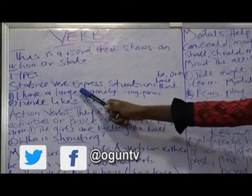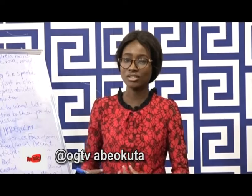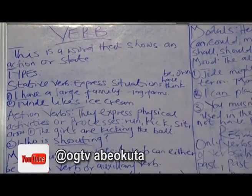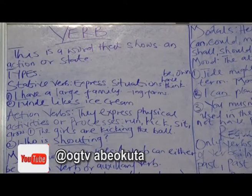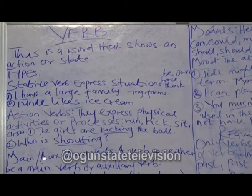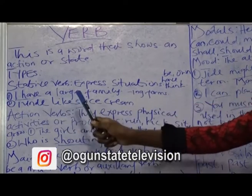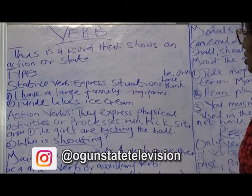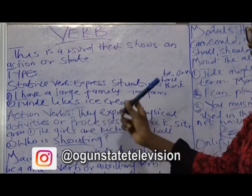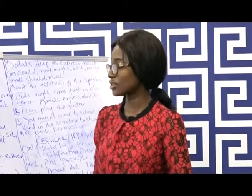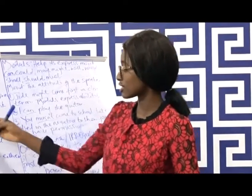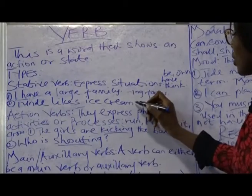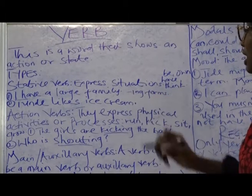Example: I have a large family. This is telling us what I have. I cannot say 'I am having a large family.' You cannot use these verbs in this manner. Another sentence: Tunde likes ice cream. You cannot say 'Tunde liking ice cream.' This is not a correct way of expressing this sentence. You cannot use these types of verbs in -ing forms.